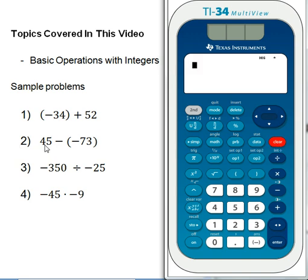Now we want to do 45 minus negative 73. Here we want to be very careful because we're going to be using both subtraction, which is an operator, and a negative, which is just the sign of a number. So we hit 45 minus, and then it's negative 73. We use the negative button and then 73.